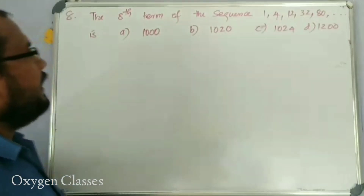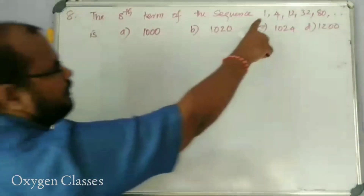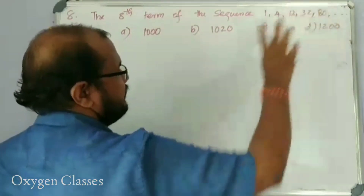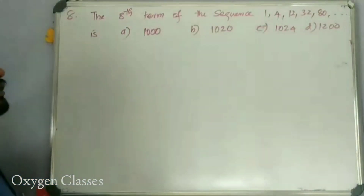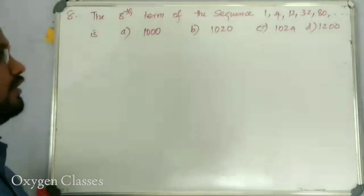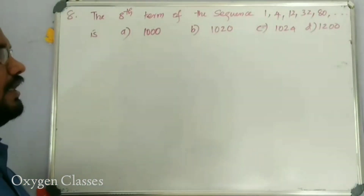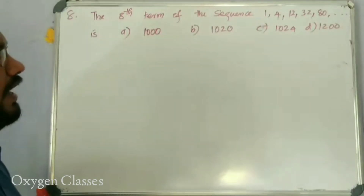The eighth term of the sequence 1, 4, 12, 32, 80, etc. — this is what we are looking for. If you are looking for an arithmetic or geometric progression, you can see that this is an arithmetico-geometric progression.